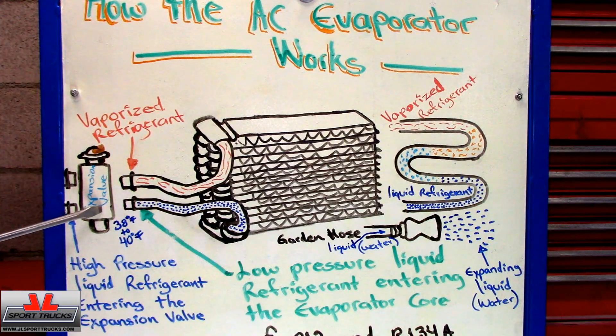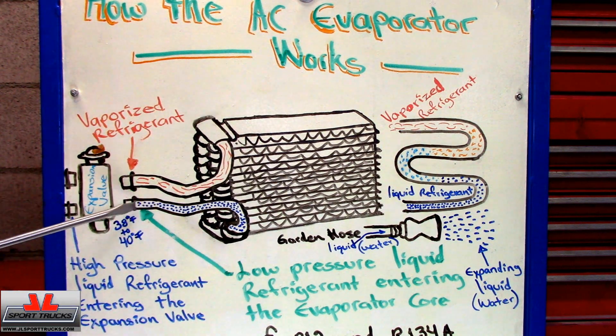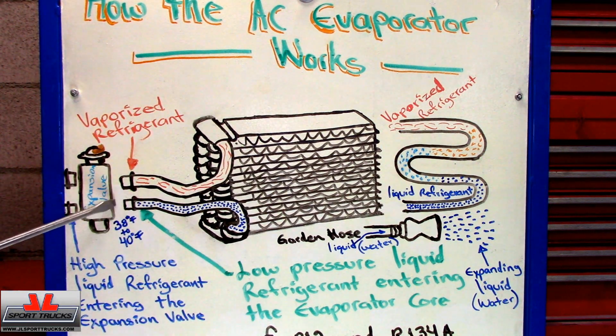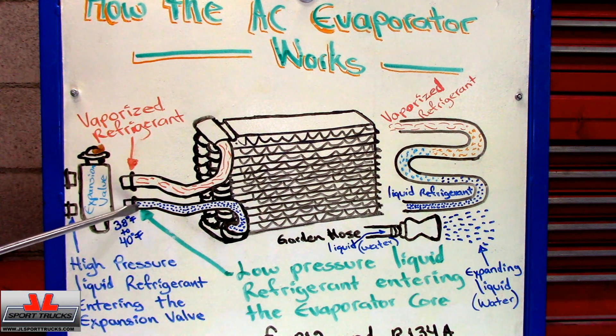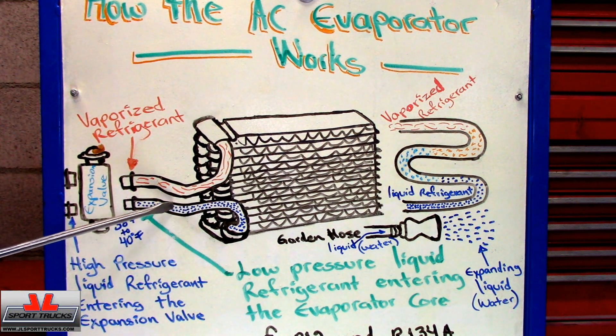Now we can go from here to the evaporator core. As the flow gets restricted, it turns into a low pressure liquid because it has more room.